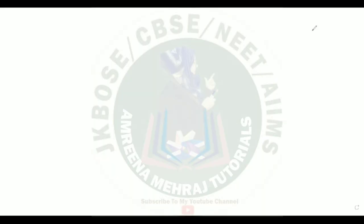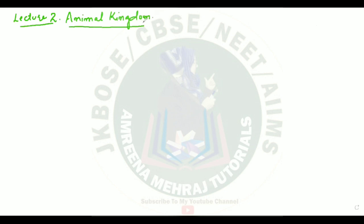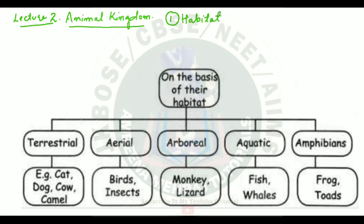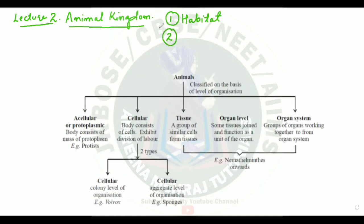Dear students, Assalamu Alaikum Warahmatullahi Wabarakatuh. This is lecture number two for Animal Kingdom. We have started animal kingdom, and till this point you know about the diversity in animal kingdom on the basis of: number one, habitat - the different animals found on the surface of the earth; and number two, the diversity of animals based on their level of organization.